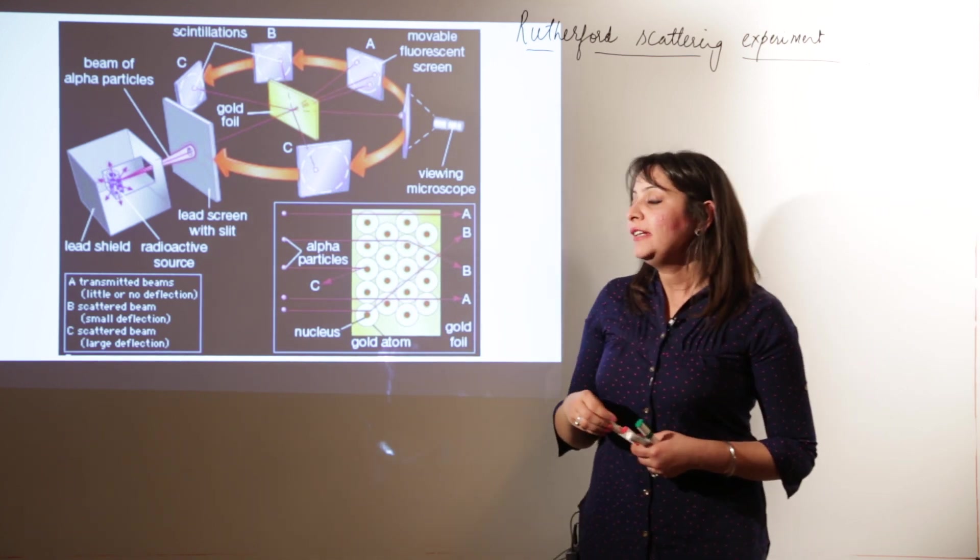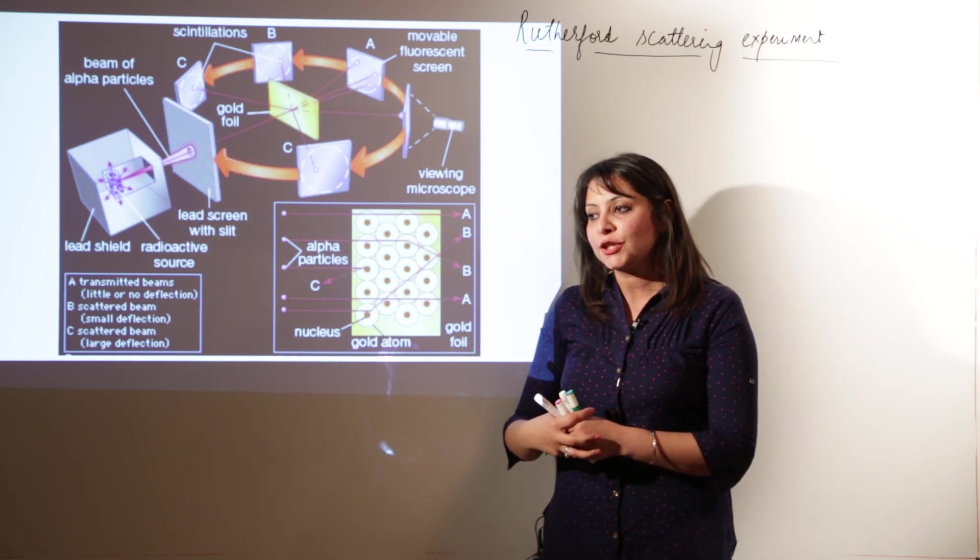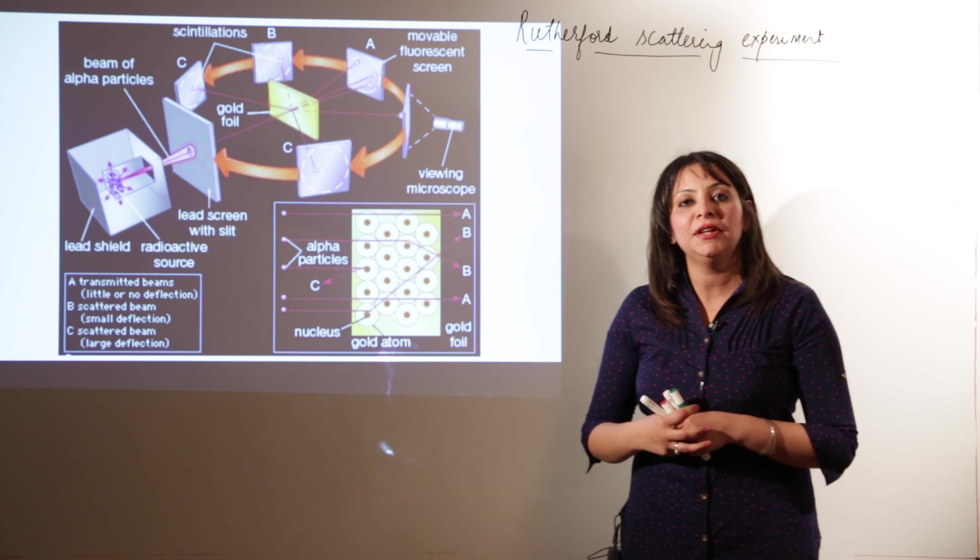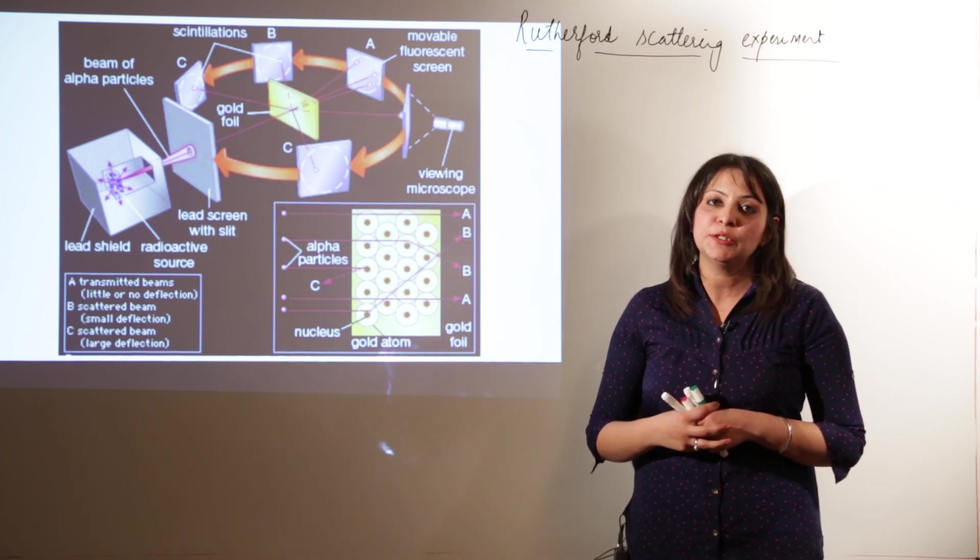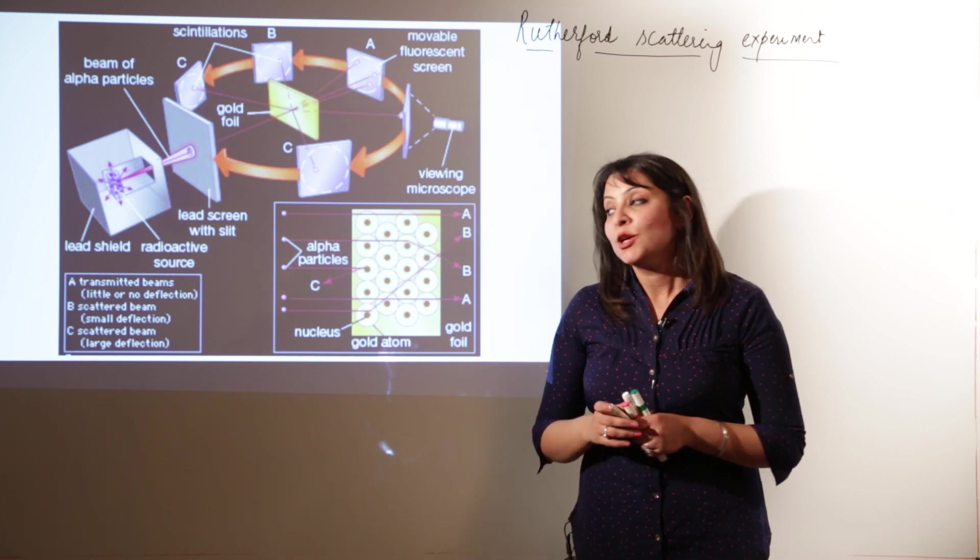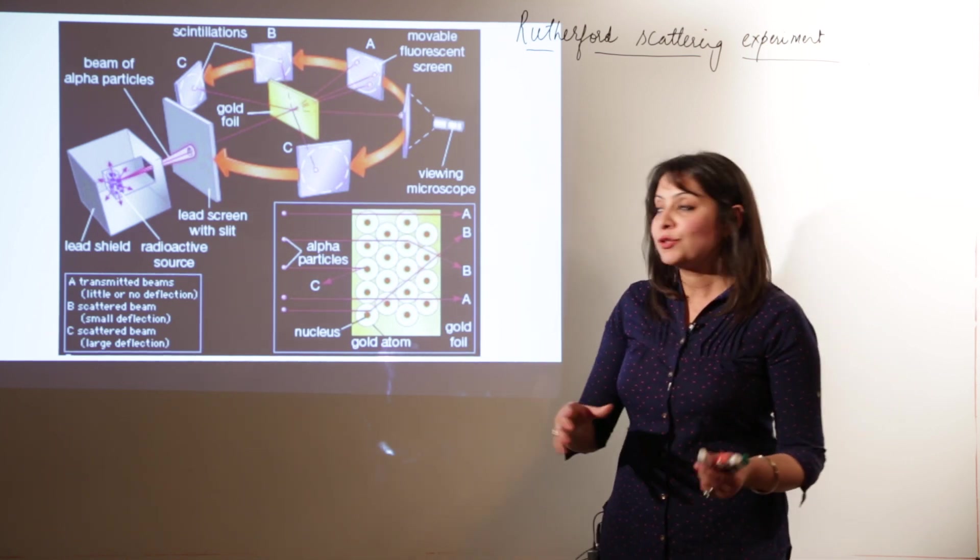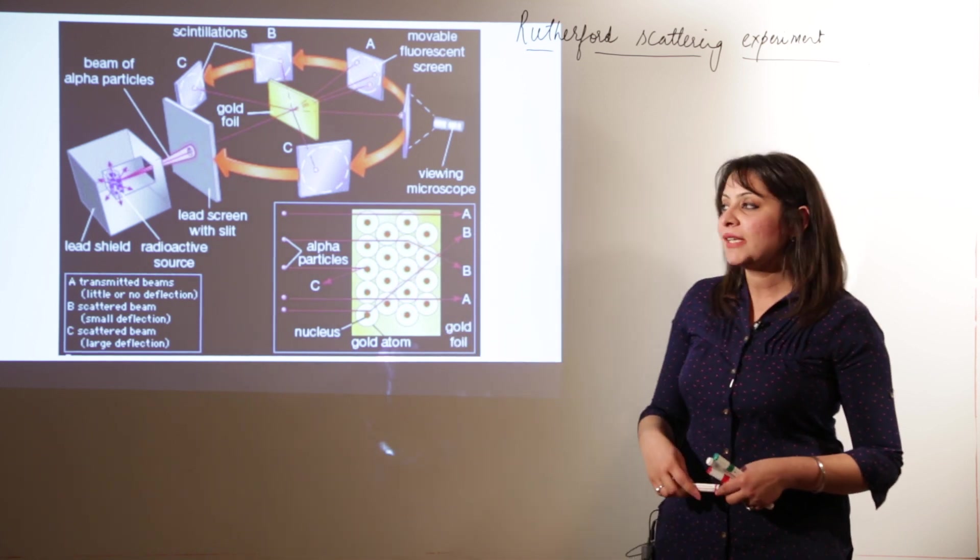So what he did, he gave his model of structure of atom by performing an experiment called the Rutherford scattering experiment. For the experiment, he took an apparatus. First of all, I want you to know what the apparatus actually is. That is shown in the figure. We are going to study that.